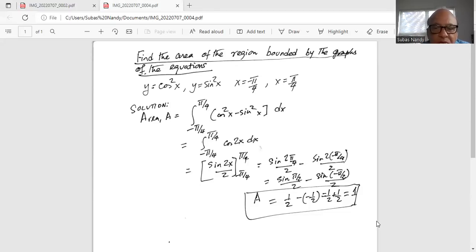So we have sine 2 pi by 4, the upper limit divided by 2, minus sine 2 times minus pi over 4 divided by 2. So it is sine pi by 2 divided by 2 minus sine minus pi by 2 divided by 2.